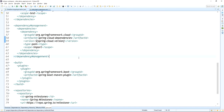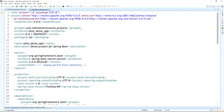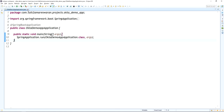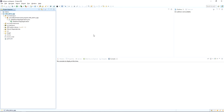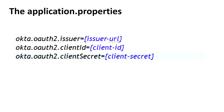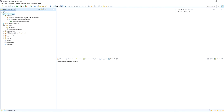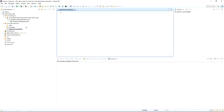Also the Spring Cloud dependency management XML is there. The project has been imported successfully into Eclipse. Go to the application.properties file and then add these three properties: okta.oauth2.issuer, okta.oauth2.clientId, and client secret. Now I am going to open the application.properties file and add these three properties.